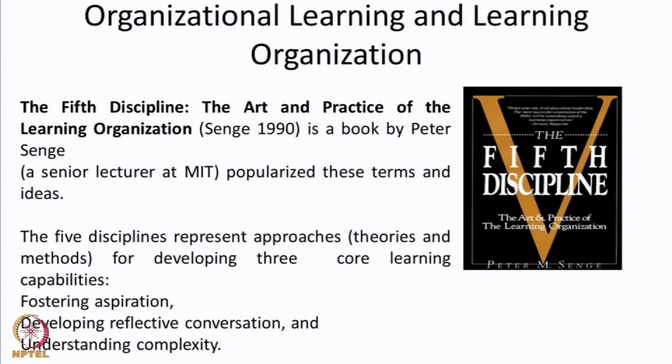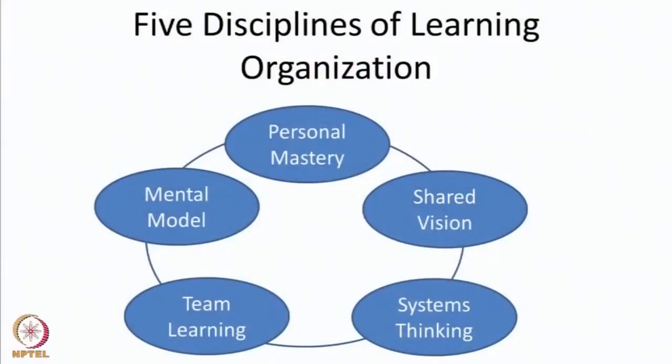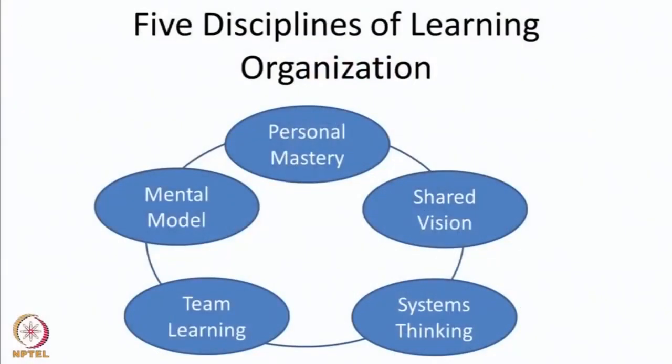Peter Senge identifies three core learning capabilities: fostering aspirations, developing reflective conversations, and understanding complexity. The five disciplines of the learning organization are: personal mastery, mental models, shared vision, team learning and systems thinking.